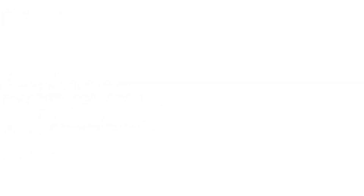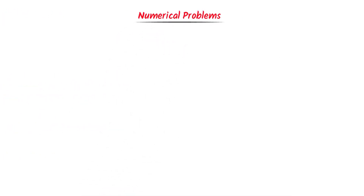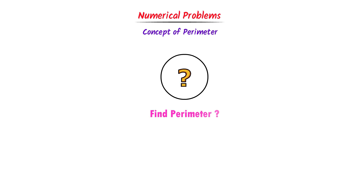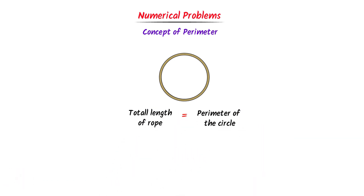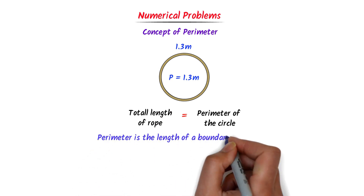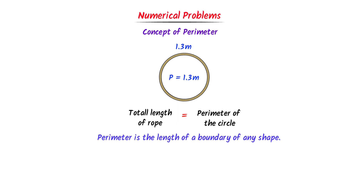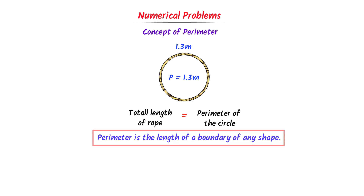Now let me teach you numerical problems of distance, displacement, speed, and velocity. To solve these, you must understand the concept of perimeter. Consider a circle — if I wrap a rope around it, the total length of that rope equals the perimeter of the circle. For example, if the rope length is 1.3 meters, the perimeter of the circle is 1.3 meters. Remember: perimeter is the length of the boundary of any shape.